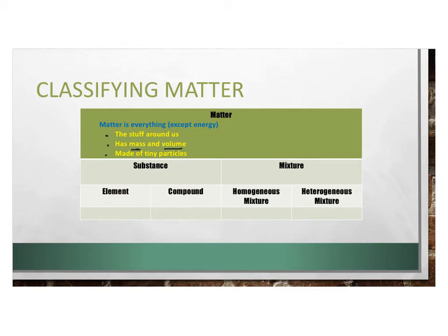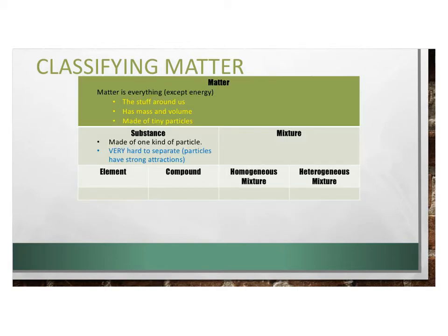Scientists can classify matter in different ways. One way is based on the makeup of the particles, and when they do that, they break it down into two categories: substances and mixtures. If matter is a substance, it's made of only one kind of particle. If you blew the matter up to the atomic, sub-microscopic level, everything in it would be made of just one kind of particle — all the particles would look the same.